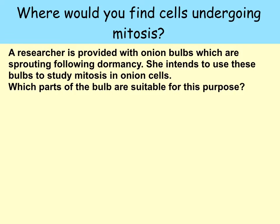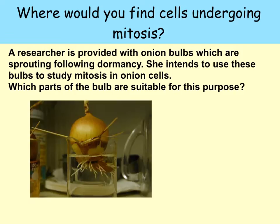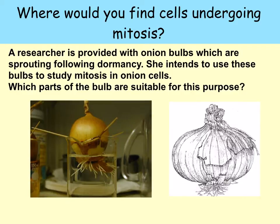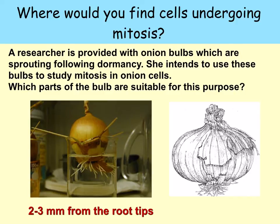Let's have a look at a question. A researcher is provided with onion bulbs which are sprouting following dormancy. She intends to use these bulbs to study mitosis in onion cells. Which parts of the bulb are suitable for this purpose? It would be at the root tips — so two to three millimetres from the root tips.